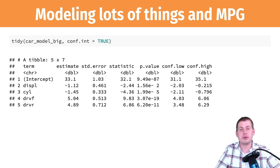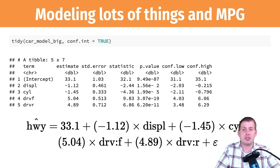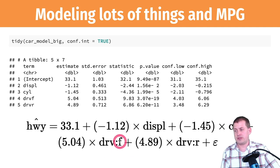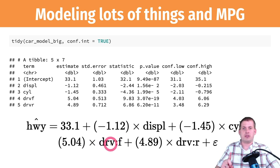If we run a model with a bunch of explanatory variables, the results show we still have our intercept, but now we have slopes for each variable: displacement, cylinders, front-wheel drive, and rear-wheel drive. We can still predict highway miles per gallon: if displacement is 4, the car has 6 cylinders, and it's front-wheel drive (not rear-wheel drive), we compute 33.1 + (−1.12)×4 + (−1.45)×6 + 5.04×1 + 4.89×0 to get our predicted value.